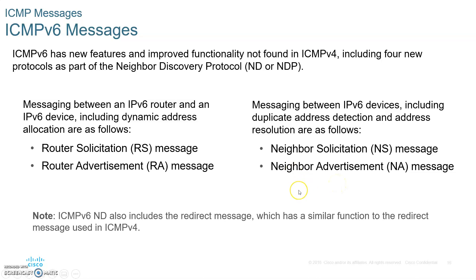The router solicitation is when the host asks the router for a network prefix. Remember, every 200 seconds the router sends out a router advertisement advertising the prefix. But if the PC came up between those 200 seconds, it will send a router solicitation telling the default gateway, hey, can you please give me my network prefix so I can make up my own IP address. The router will then send a router advertisement. So every 200 seconds, the router sends a network prefix to hosts in the stateless auto-configuration.